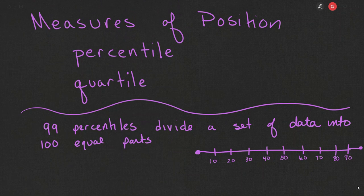Measures of position, as a review, are the percentile or the quartile. Percentiles and quartiles tell us where a piece of data falls among the other data points.